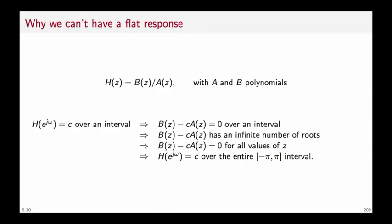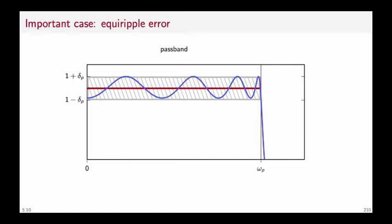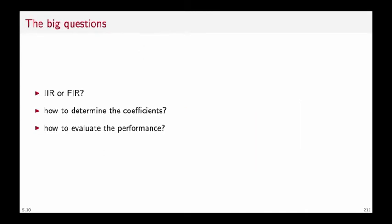As a consequence, you can think of the frequency response of a filter as a shark — it must always move and can never be at rest. An important case is what we call the equiripple error, where the error oscillates between a maximum and a minimum, and the local extrema of the frequency response coincide with the upper and lower limits of the tolerance region. Once the specs are in place, the three big questions are: first, are we going to design an IIR or an FIR? And once we have answered that, how will we determine the coefficients of the transfer function, and how do we evaluate the performance of the filter?